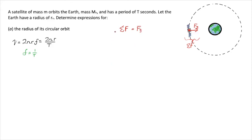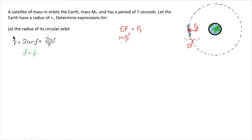Net force by Newton's second law is replaceable with mA, and since the acceleration here is centripetal, we can say mAc, or use the definition of centripetal acceleration and substitute v squared over r. That's already useful because we're bringing up variables we know and the radius we'd like to find, as well as the velocity.